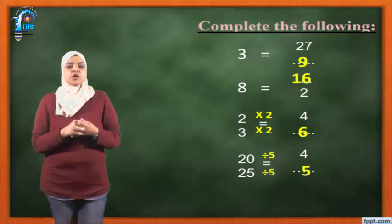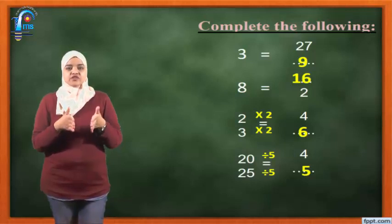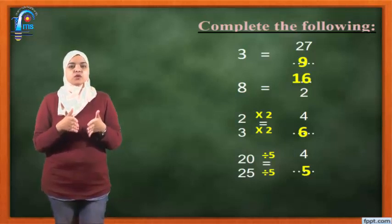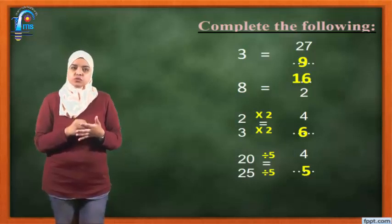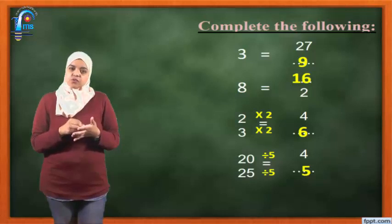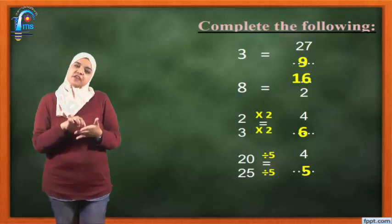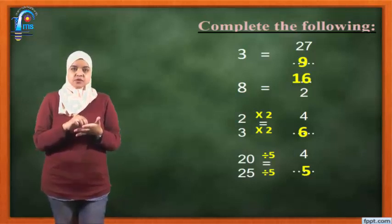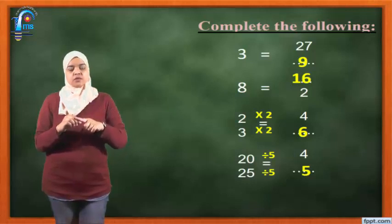2 over 3 equals 4 over what? This type is called Equivalent Fractions — two fractions I want to be equal. How? 2 becomes 4. How? 2 times 2 will be 4. So 3 times 2 down will be 6. If the sign up is times, so it must make the denominator times too — times 2 up and times 2 down.